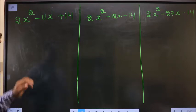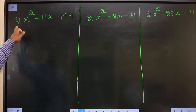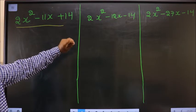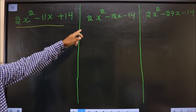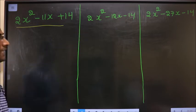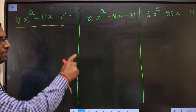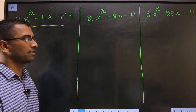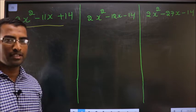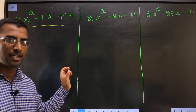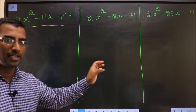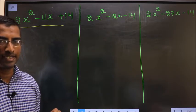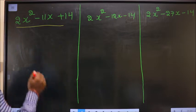In this video, we will factorize three expressions: 2x² - 11x + 14, 2x² - 12x - 14, and 2x² - 27x - 14, and understand the difference in each of them.